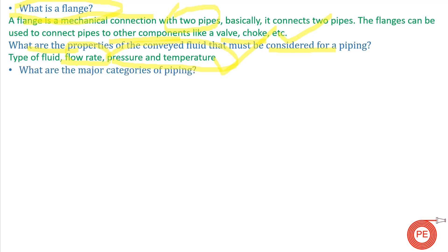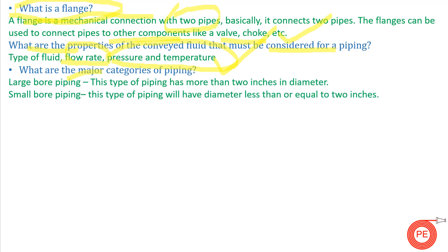Next question: what are the major categories of piping? Broadly speaking, there are two categories: large bore piping and small bore piping. Large bore piping covers pipes with sizes more than two inches, while pipes with a diameter of two inches or under belong to small bore piping.